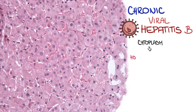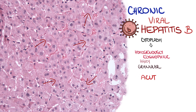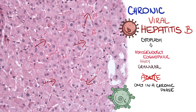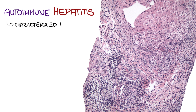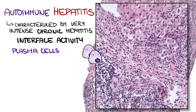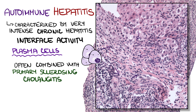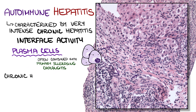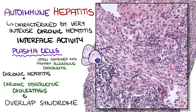The stored surface antigen grants hepatocytes a ground-glass appearance. Such cytoplasm is homogeneously eosinophilic, hazy, and slightly granular. We don't see this in acute viral hepatitis B, only in the chronic phase. Chronic hepatitis C often manifests as steatohepatitis. Autoimmune hepatitis is characterized by very intense chronic hepatitis with marked interface activity and numerous plasma cells in the inflammatory infiltrate. It's often combined with primary sclerosing cholangitis. In that case, we can see a combination of both chronic hepatitis and signs of chronic obstructive cholestasis in microscopy. This so-called overlap syndrome is common especially in pediatric age.